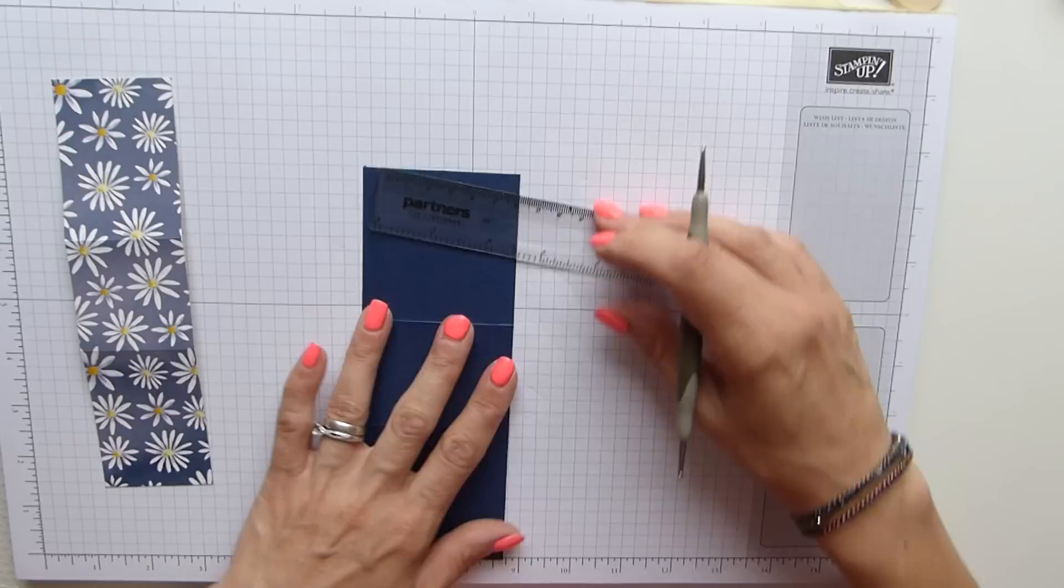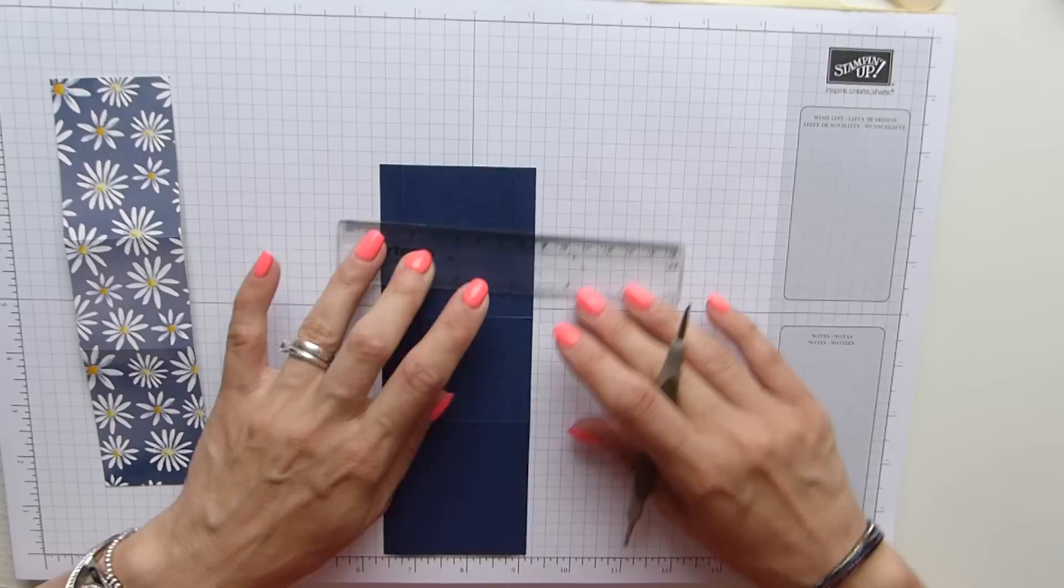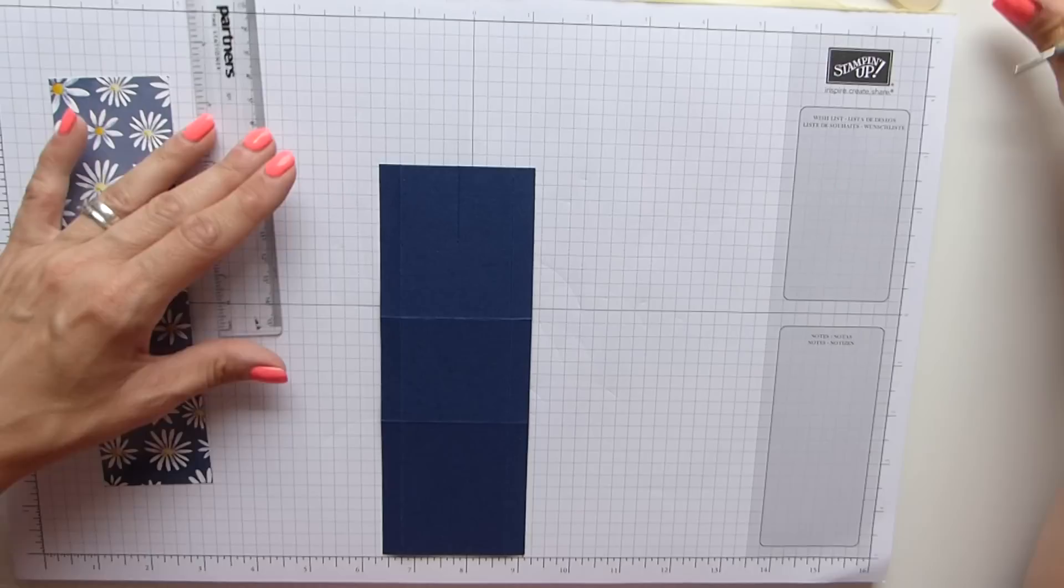And then from that, you need to score down to three and a half centimeters. And do the same again at the top. So find the midpoint, which is two and a half. And then score down with a straight line to three and a half.